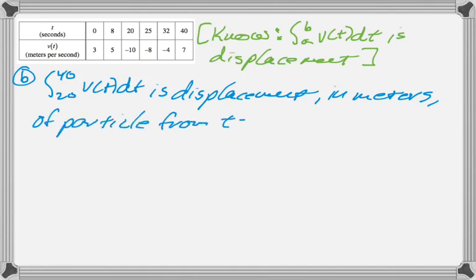I think it's a particle, yep, from t equals 20 to t equals 40 seconds. Part B here has a bonus question, which is to use a trapezoidal sum with three subintervals to actually approximate this definite integral.